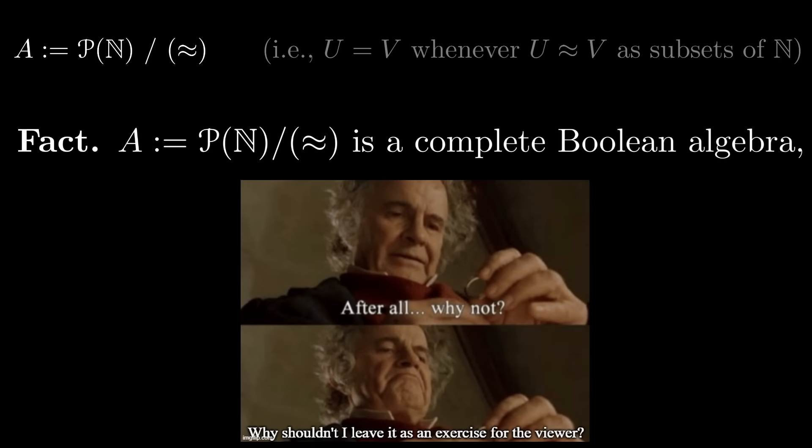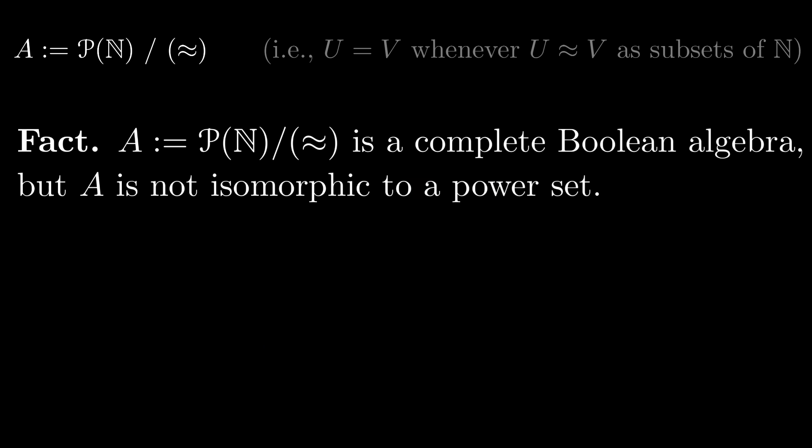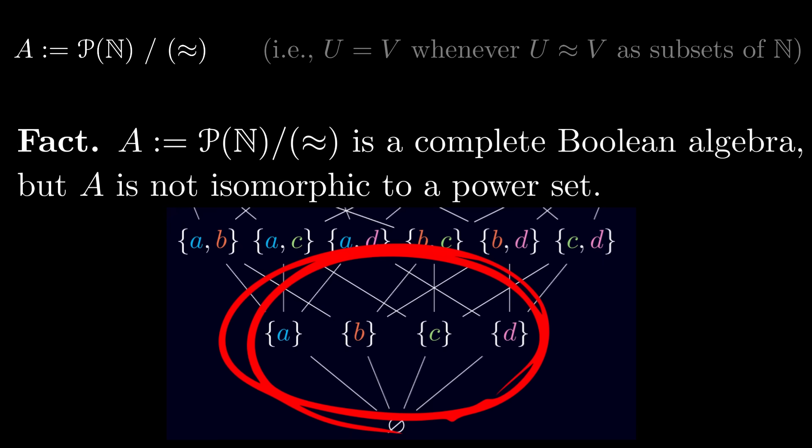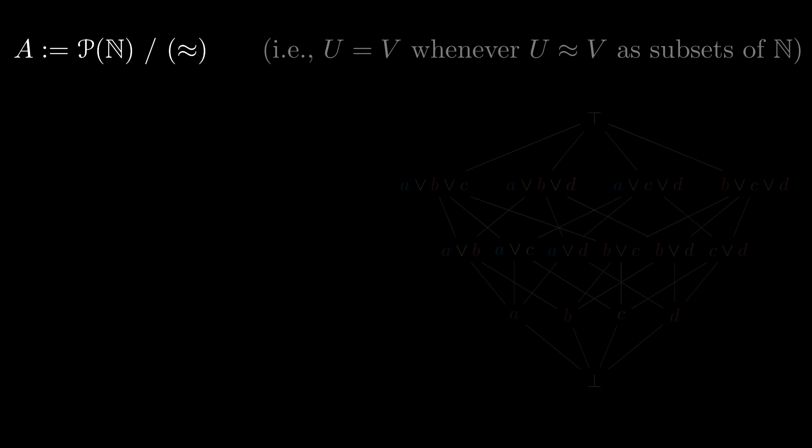So, we have a complete Boolean algebra. However, A is not isomorphic to the power set of anything. We can prove this by trying to infer what the singletons in A would have to be. In a Boolean algebra, the smallest element corresponds to the empty set. Singletons, on the other hand, are the second smallest elements.